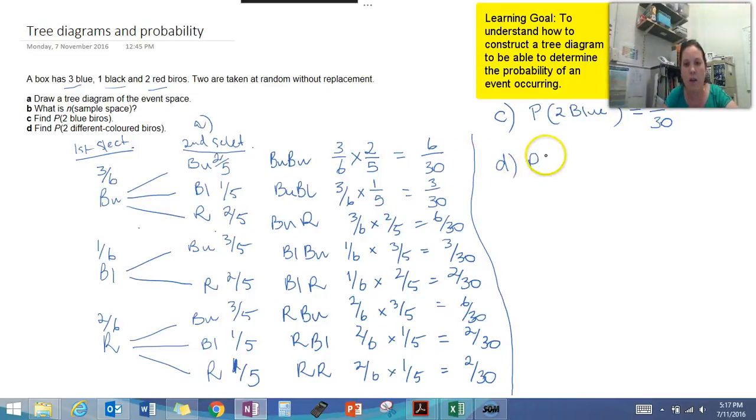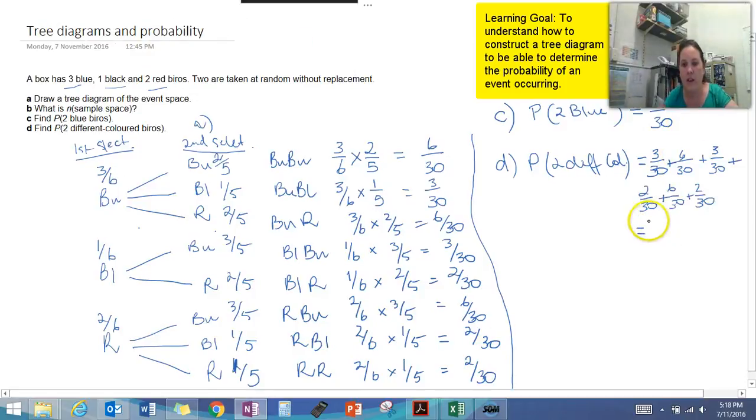For the next one, the probability of getting two different colors. There are two ways that we can do this. So the first way is that we can add up all of the probabilities of getting different colors. So the ones that aren't the same. So everything but blue blue and red red. So we'd add all of those together. And that should then give us 22 over thirty as the probability of that occurring.